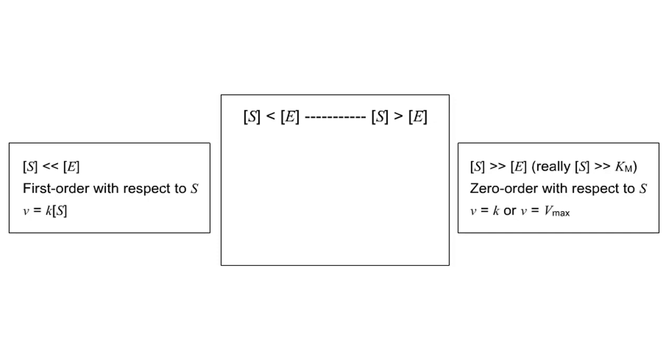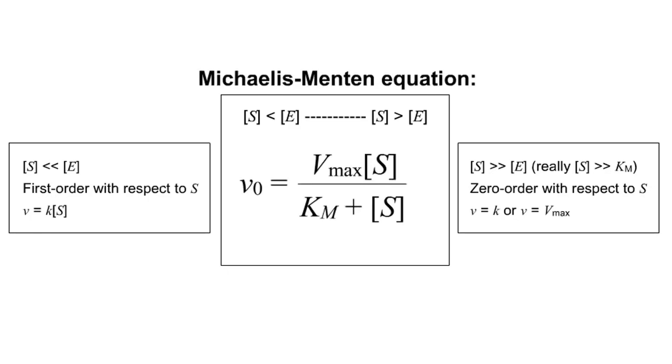In between these two extremes, we need to use a slightly more complex rate equation called the Michaelis-Menten equation.